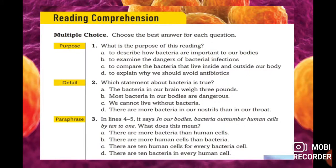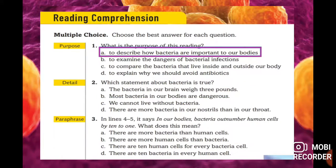Now for the reading comprehension. Question one: what is the purpose of this reading? Options are: to describe how bacteria are important to our bodies; to compare bacteria inside and outside the body; or to explain why we should avoid antibiotics. The correct answer is option A — to describe how bacteria are important to our bodies.